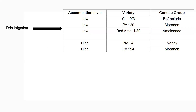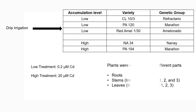From these five varieties we collected rooted cuttings and grew them in a drip irrigation system using a soilless media of vermiculite, sand, and gravel. Nutrients were fed through the drip irrigation system for nine months of growth without any cadmium treatment. After nine months, cadmium treatment was added at low and high levels for three months. At the end of that three-month period, the plants were separated into roots, stems — separated into interflush one, two, and three phases — and leaves, also separated into interflush one, two, and three phases.